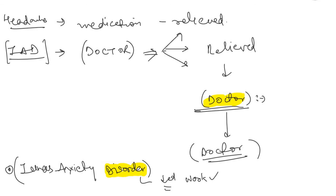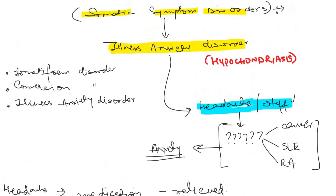To summarize: in illness anxiety disorder, the patient is not concerned about the symptom — they are concerned about the disease and taking too much anxiety about it, although everything is perfectly normal. This is the illness anxiety disorder, another disorder among the somatic symptom disorders. Thank you for watching — if you liked it, press the like button and share it with your friends.